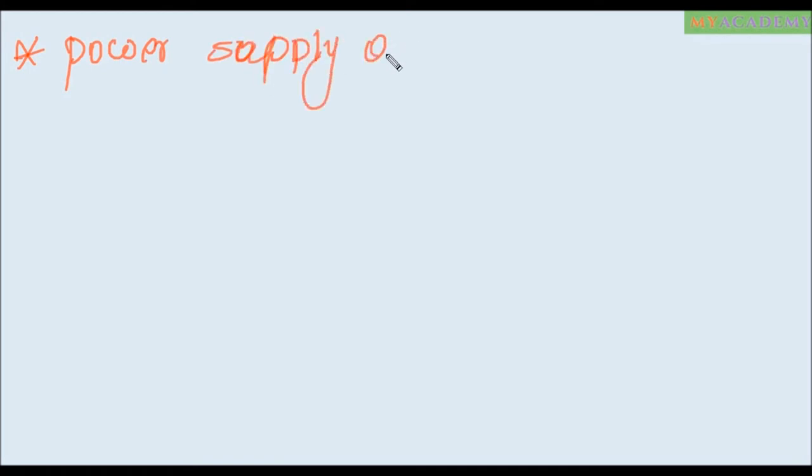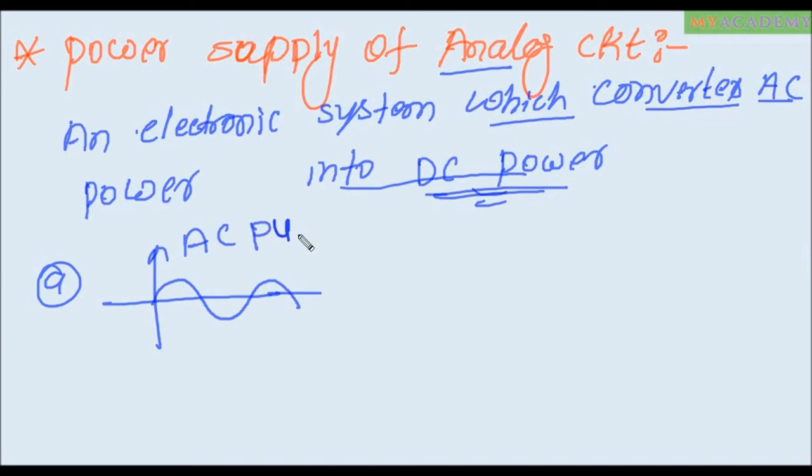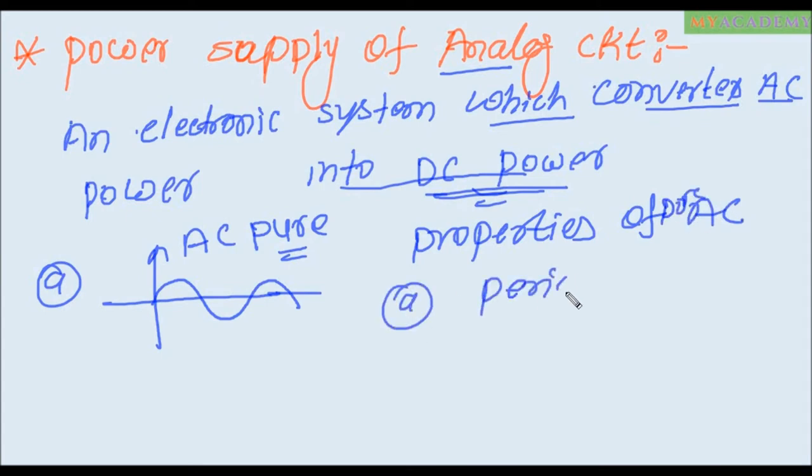Next topic: power supply of analog circuit. An analog circuit system which convert AC power into DC power because all electronic circuit work on DC power. First input is analog input, this is the sinusoidal wave and this is the AC, pure AC. Property of AC signal pure AC: